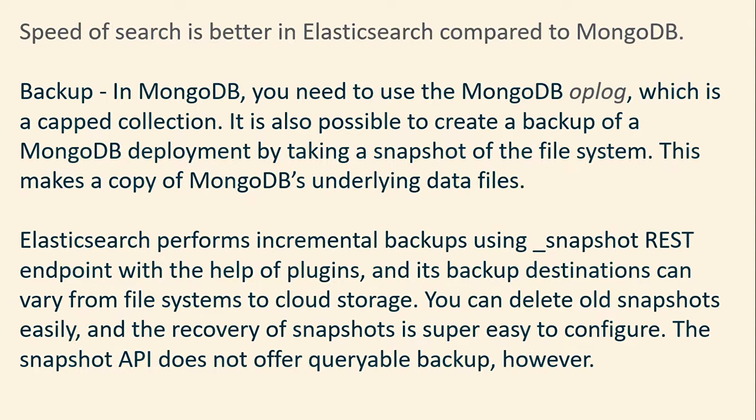Looking at the differences: the speed of search is better in Elasticsearch compared to MongoDB. For backup, in MongoDB you need to use the MongoDB Oplog, which is a capped collection. It is also possible to create a backup by taking a snapshot of the file system, which makes a copy of MongoDB's underlying data files. Elasticsearch performs incremental backup using snapshot restore points with the help of plugins, and its backup destination can vary from file system to cloud storage. You can delete old snapshots easily and recovery is super easy to configure.